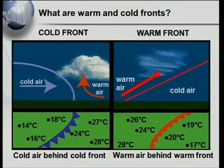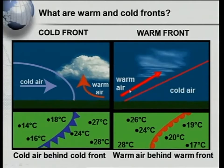Exactly the same when we have a look at our warm front. Here we've got the warm front. You must look at the air behind the front. This air is moving in this direction. Here I've got the warm air and the cold air — the warm air is behind the warm front. Here we've got the warm front symbol. Have a look at the air in front: 19, 20, 17 degrees. Have a look at the air behind the front: 26, 24, 28 degrees Celsius.